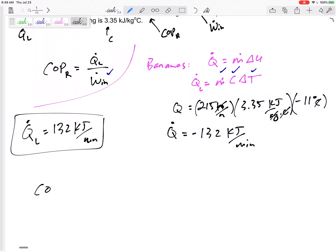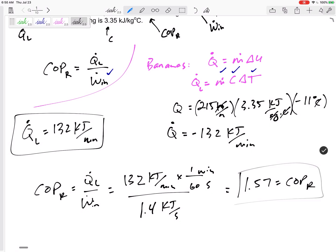Why is it negative? Because this delta t is negative, it's coming out of the bananas. But that is going to be the Q_L. So coefficient of performance for a refrigerator is Q_L over W_in: 132 kilojoules per minute over 1.4 kilowatts. A kilowatt is a kilojoule per second, so let me change this - one minute, 60 seconds. There you go, unitless: 1.57 is the coefficient of performance of this refrigerator.